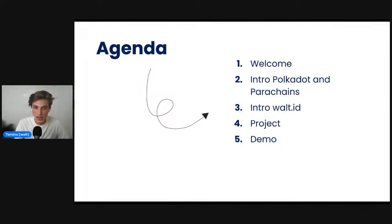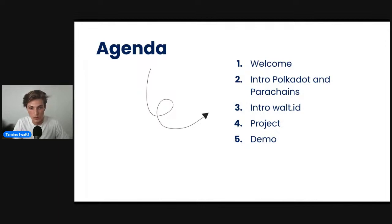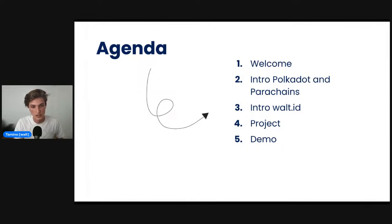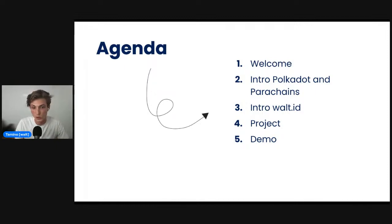My name is Tamino from the Vault ID team. We'll go into Polkadot and its sidechains and learn about the values and different use cases built on top of that. After this, we'll have an introduction to Vault ID where I give a quick overview of what products we are building and what those products enable you to do as a developer. We'll also have Khalid from the Vault ID team give a quick demonstration of all the different things you can do with our tools and Polkadot support. Please welcome to the stage Keegan from Polkadot, who will give a quick introduction to the Polkadot ecosystem.